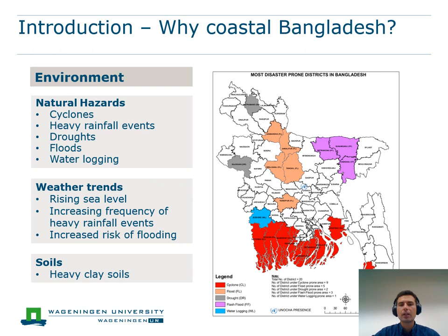This is aggravated by climate projections for South Asia indicating that sea level will rise and the frequency of heavy rainfall events will increase in the upcoming years. This, together with the presence of heavy silty clay soils in the south, often leads to waterlogging resulting in yield losses, especially in mung bean cultivation.